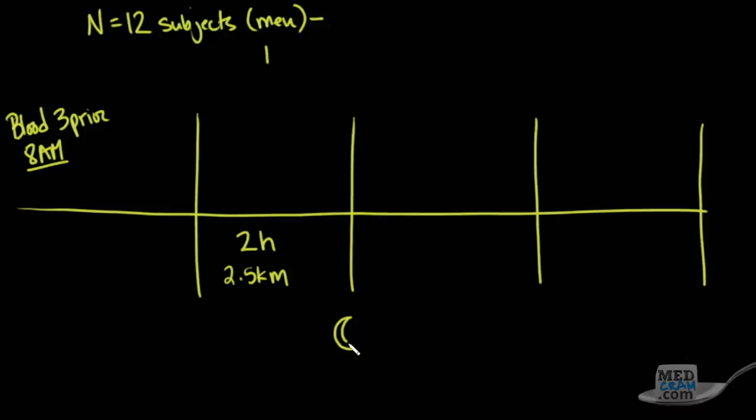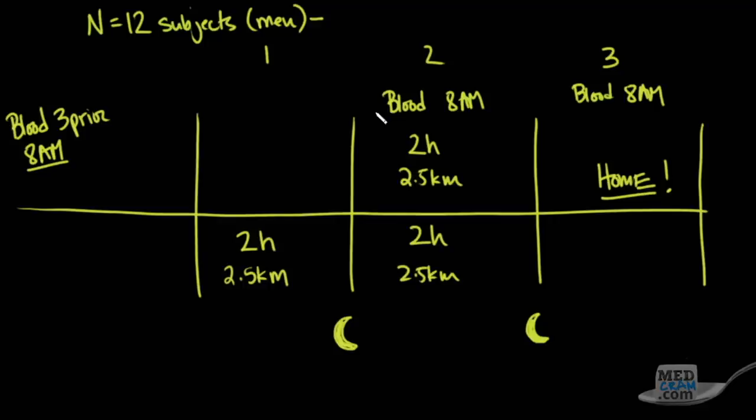Then they spent the night at a residence or motel in the forest. The next morning they got up and drew blood again at eight o'clock in the morning so they could compare it without circadian issues. Then again for another two hours they went on a hike, 2.5 kilometers in the forest. In the afternoon took another two-hour hike, 2.5 kilometers. Then they spent another night in the same hotel, got up the next morning, this would be day number three, and they drew blood again at 8 a.m., and then they went home.